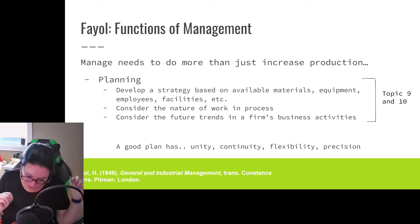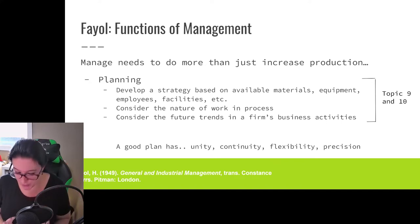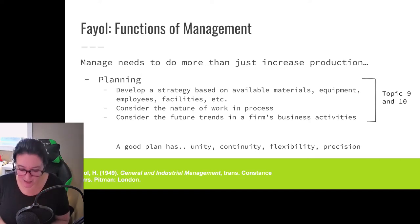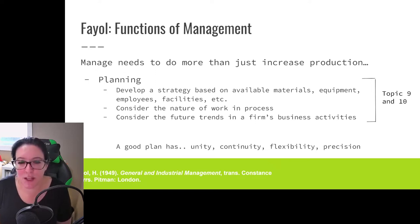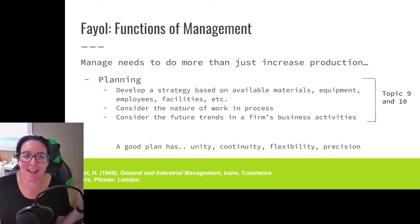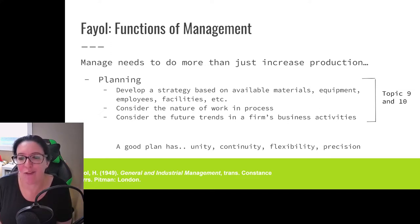We need continuity — short-term goals and long-term goals that tie together over time. We need flexibility, so we can plan and react to unexpected events. And we need precision in our plan. The role of the manager is about reducing uncertainty, creating less risk and less instability. Part of that is having a well-thought-out plan for our organization and what our people are going to do.